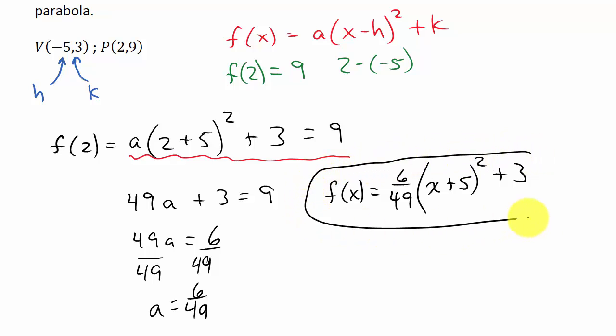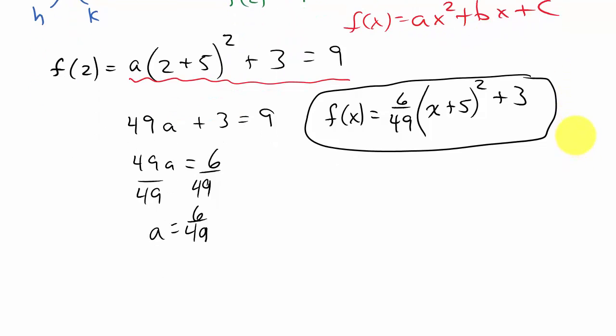And this would be your quadratic function. And if you wanted to put it in the other form, f of x equals ax squared plus bx plus c. Well, you can do that easy. Well, we know that x plus 5 squared is the same thing as x plus 5 times x plus 5. And so if I foil that out, let me do a different color to put it in the other form. So that's f of x is equal to 6 over 49 times. And then if I foil that, that's x squared plus 10x plus 25 plus 3.